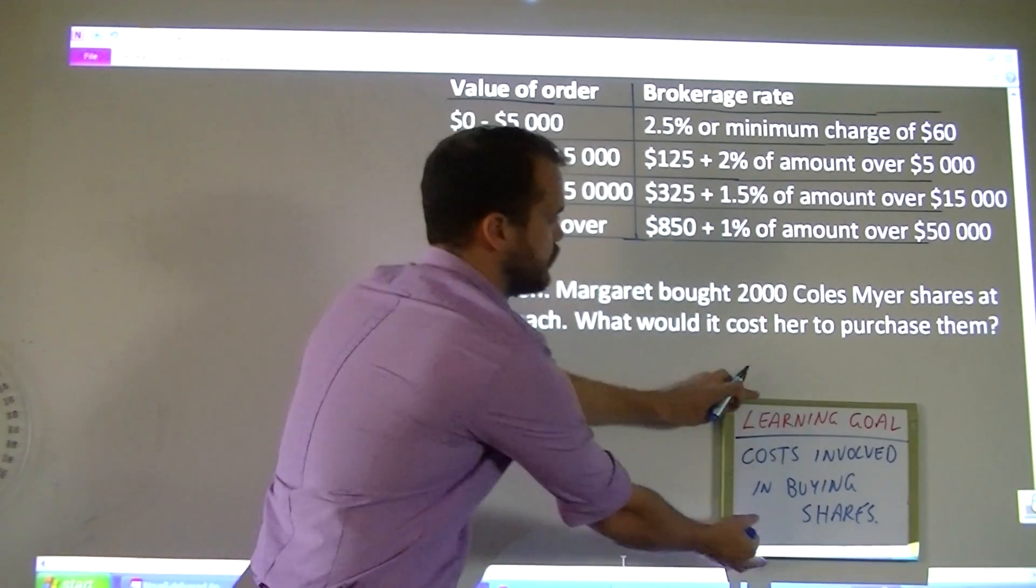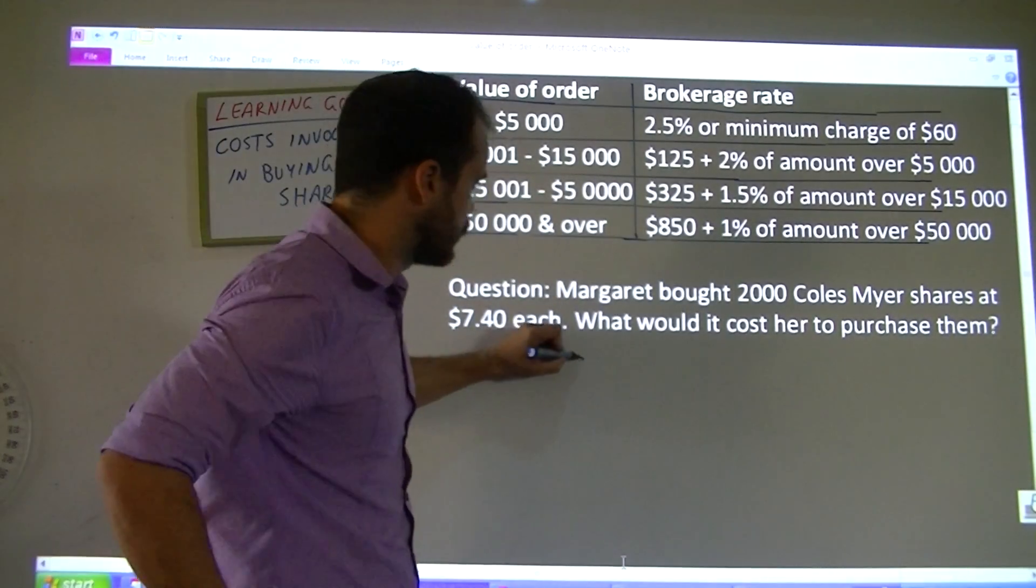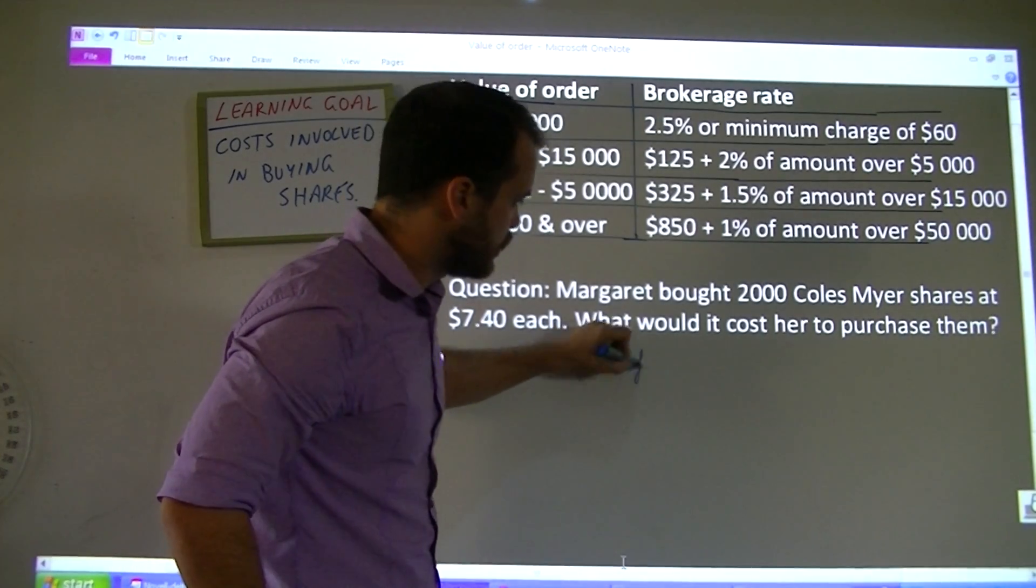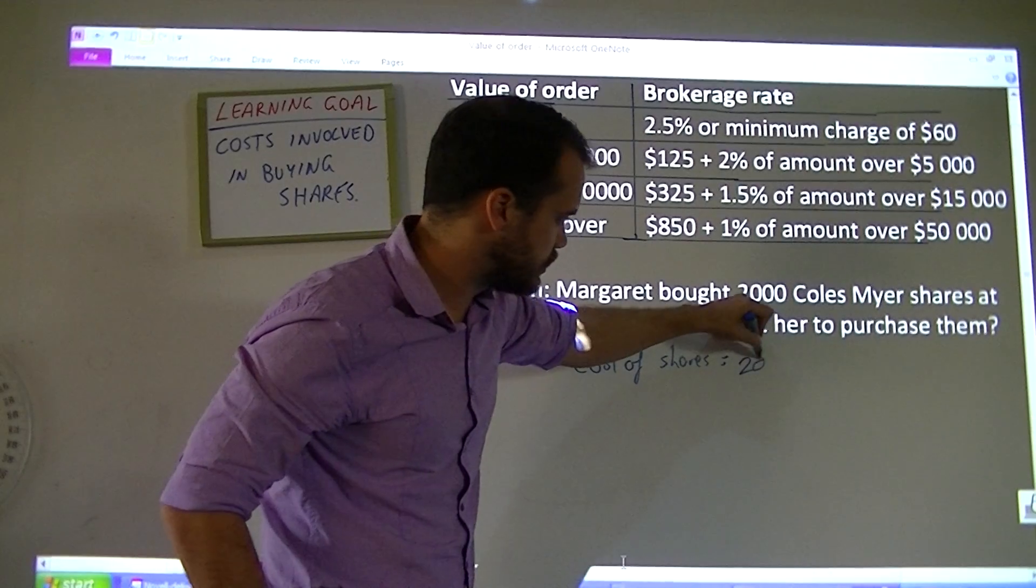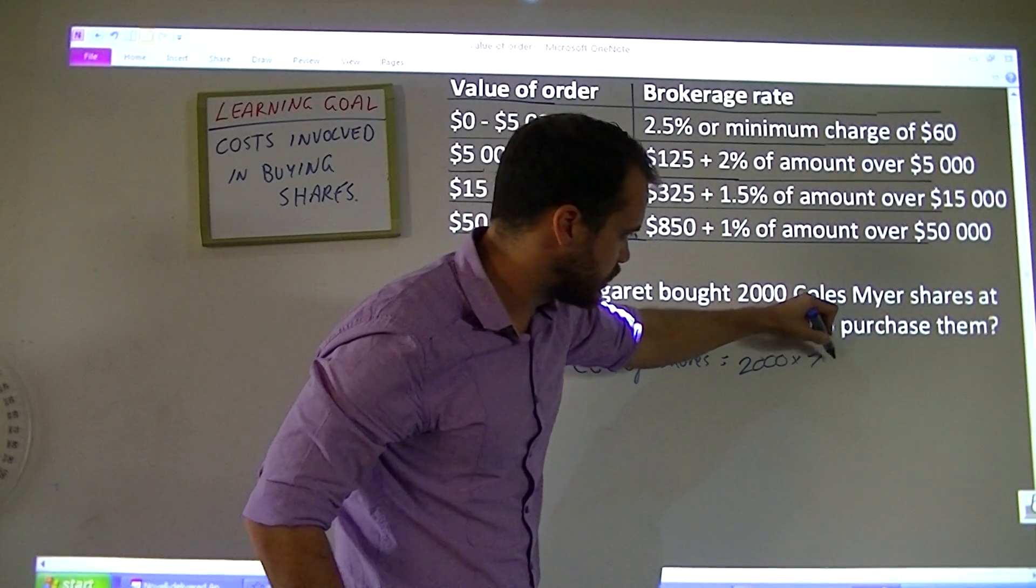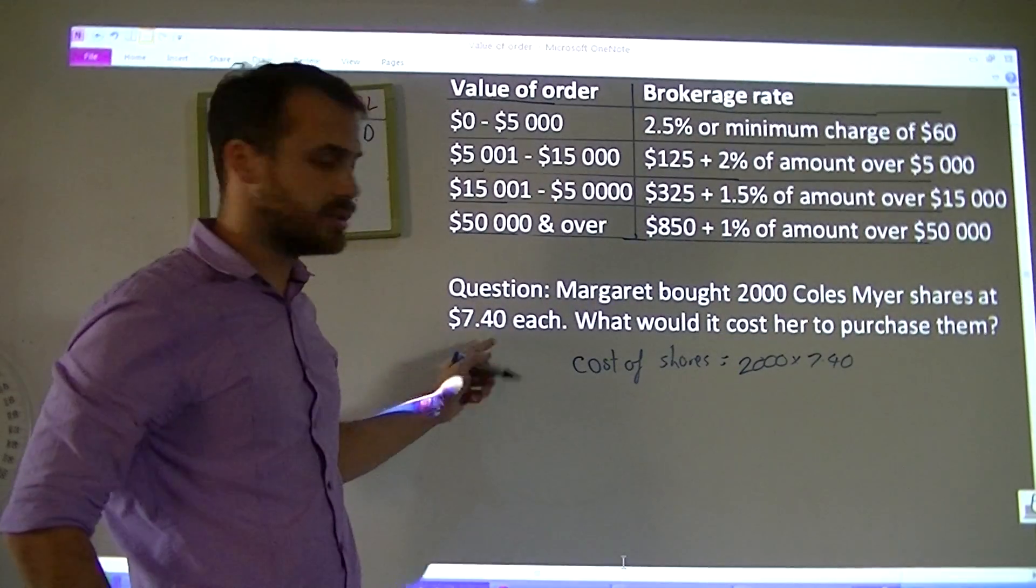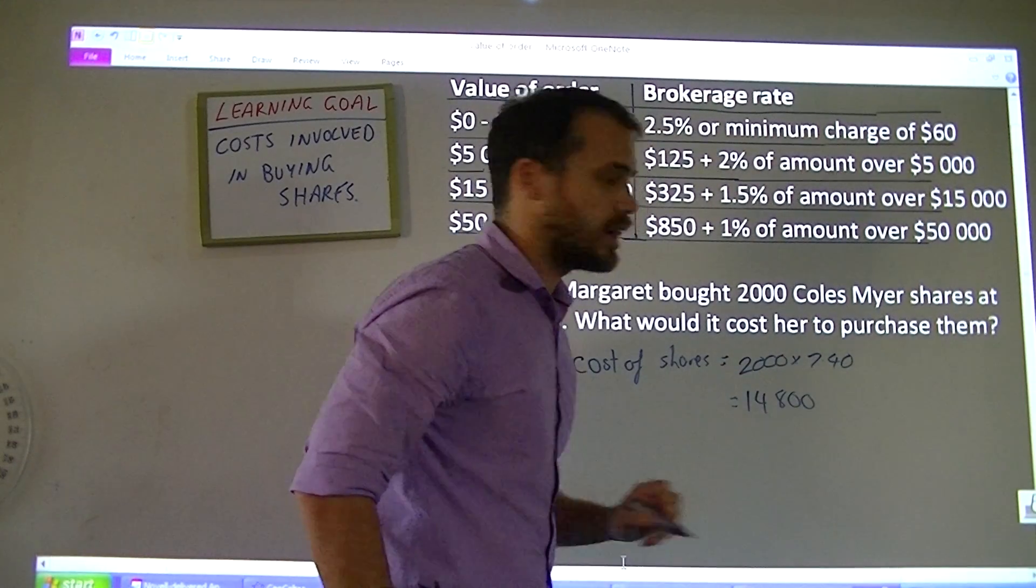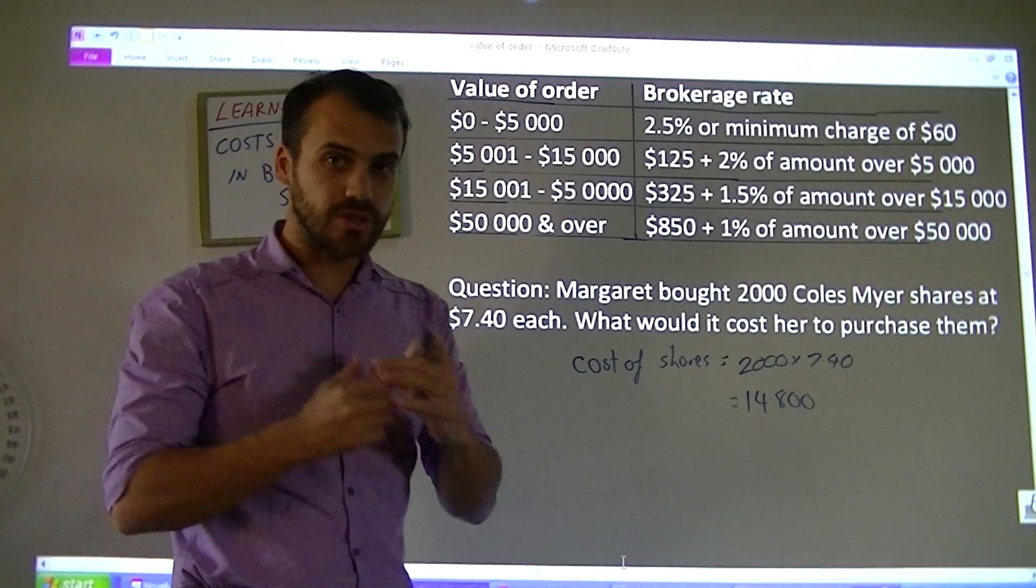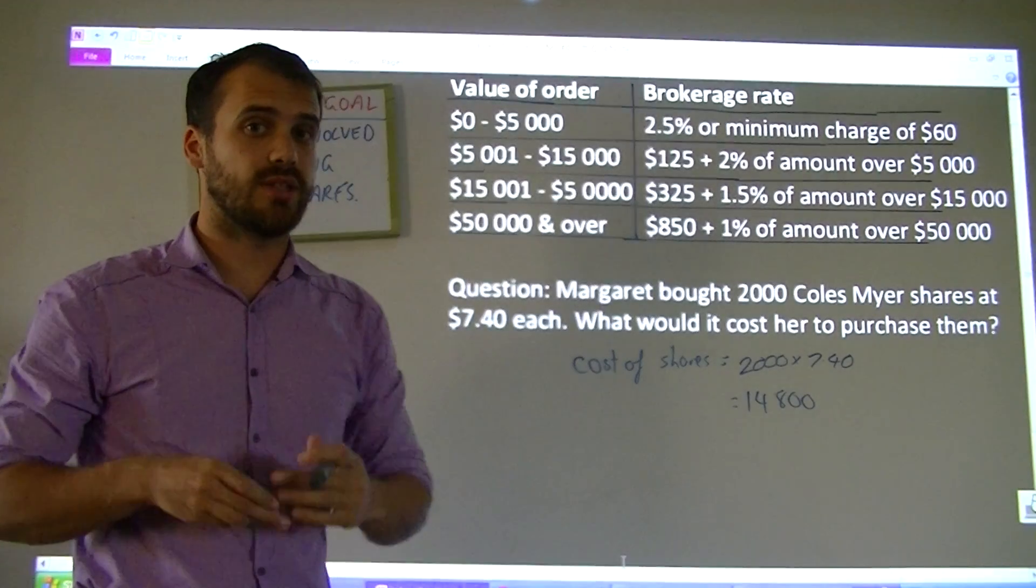Let's look at the cost of the shares themselves first. That's going to be easy enough. There's 2000 shares at $7.40 each. You put that into your calculator and you'll get $14,800. So the cost of just the shares is $14,800.